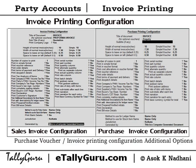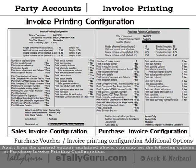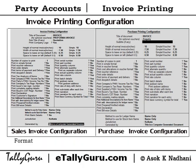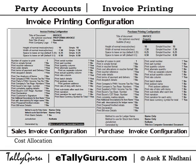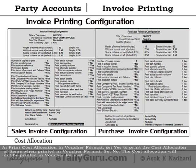Purchase voucher invoice printing configuration — additional options. Apart from the general options explained above, you may set the following options at purchase invoice printing configuration. At print in voucher format, set yes to print the purchase transaction in voucher format; set no to print in invoice format. At print cost allocation in voucher format, set yes to print the cost allocation of items when printed in voucher format; set no so that cost allocation will not be printed in voucher format.